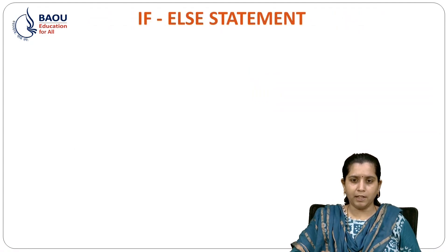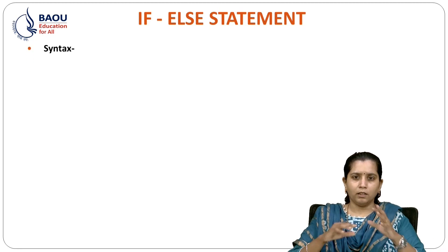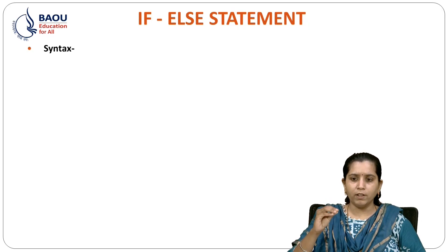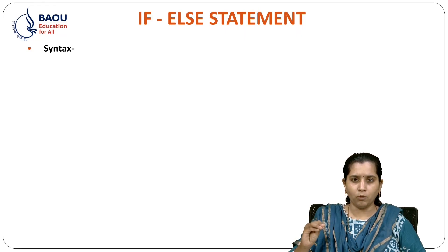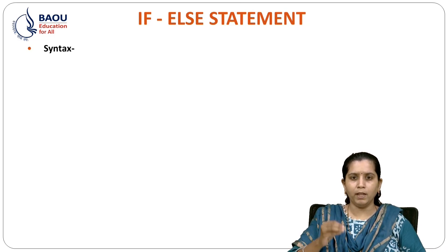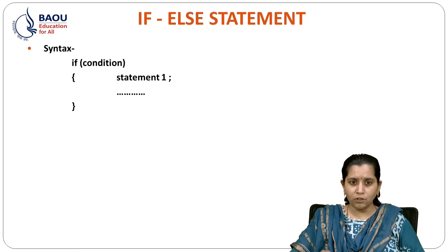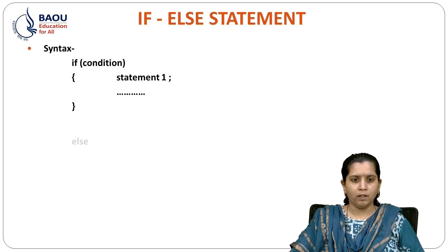Now let's see IF ELSE statement. The IF ELSE statement allows us to make a decision based on the evaluation of a given statement. If the given statement is true, then the code inside the IF block is executed. In the case the condition is false, then the code inside the ELSE block will be executed. Now let's see the syntax of IF ELSE statement: the condition will be checked, and if it is true, the IF block is executed; otherwise, it will go into the ELSE block.